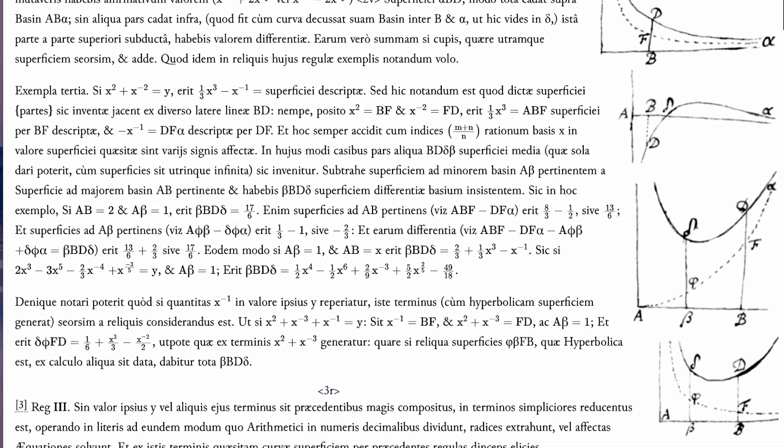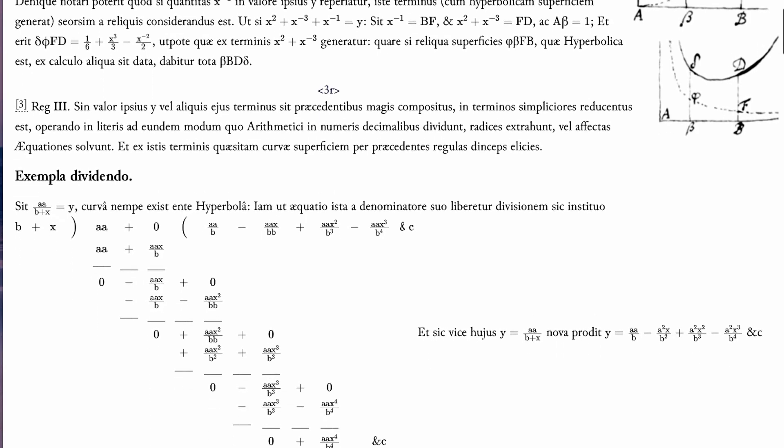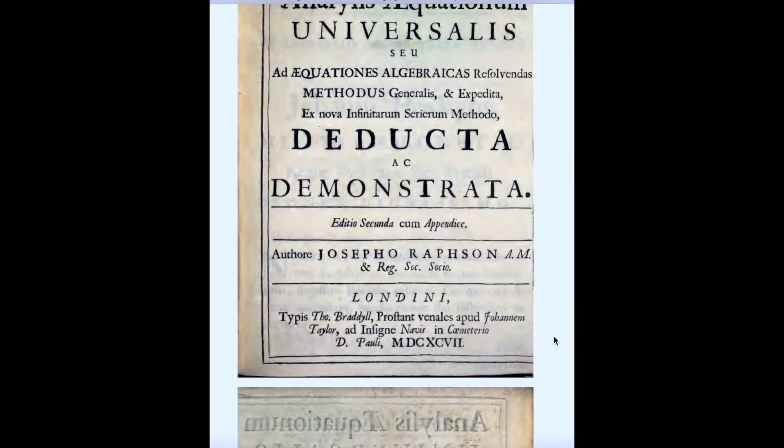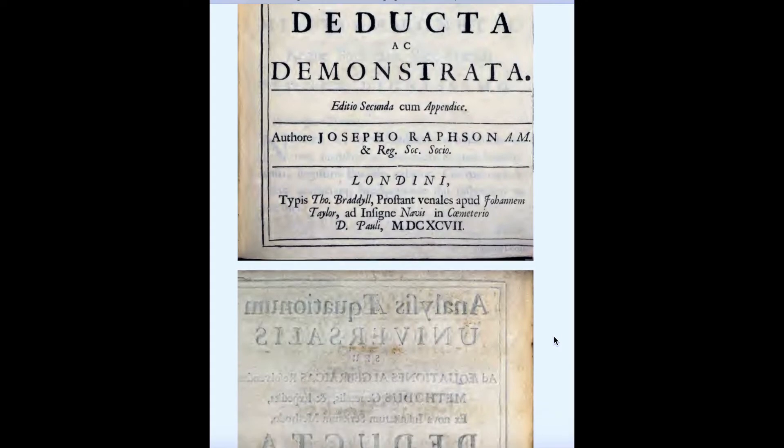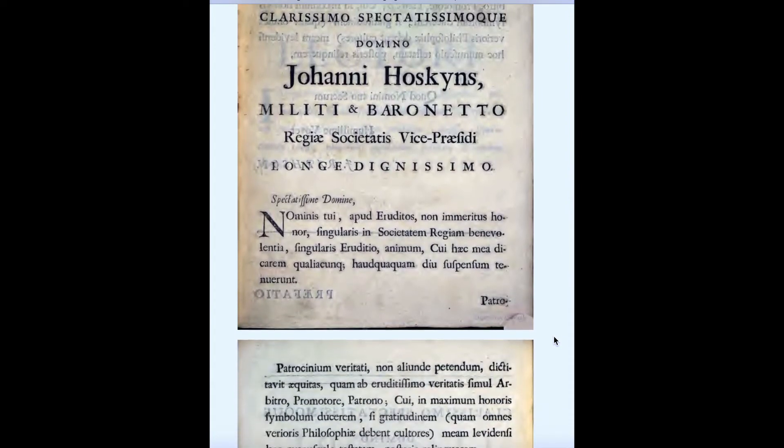Isaac Newton described a special case of a method in his book written in 1669 from which the name Newton's method is derived. In 1690, Joseph Raphson, an English mathematician, published a simplified description of the system for approximating the roots of an equation in his book.